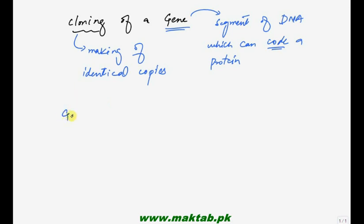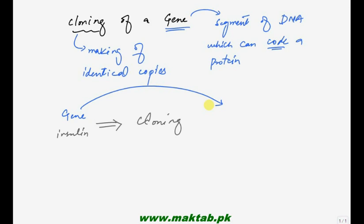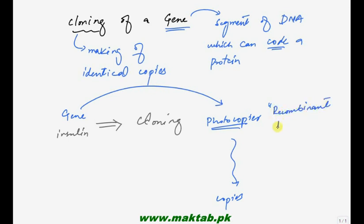मान लें हमने एक gene लिया - for example insulin का gene। तो हमारा target है insulin की cloning करनी है। इसके लिए इसका gene उठा के हम किसी ऐसी जगह ले जाएंगे जहाँ copies हो सकें - we need a photocopier। फिर वो उसकी copies बनाएगा। यह photocopier basically एक technology है जिसे हम recombinant DNA technology कहते हैं।